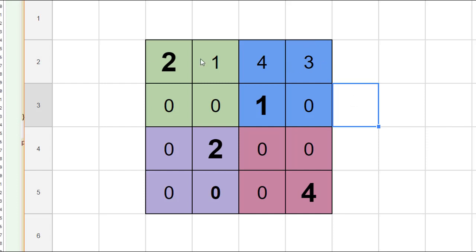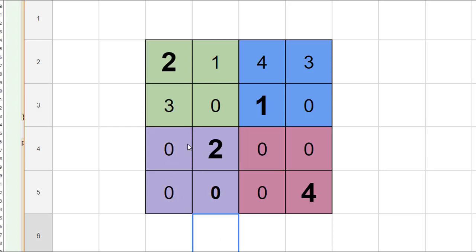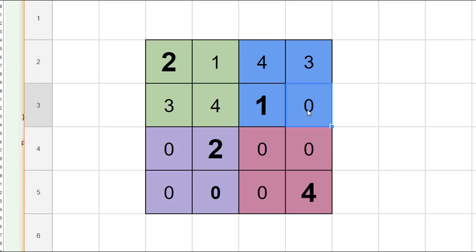Once we've exhausted an entire row we go to the beginning of the next row. We try a one — that doesn't work. A two doesn't work, so we'll put in a three here. Then we'll move on and put a four right in here. When we get to the next cell we only have one choice, and that is to put in a two.